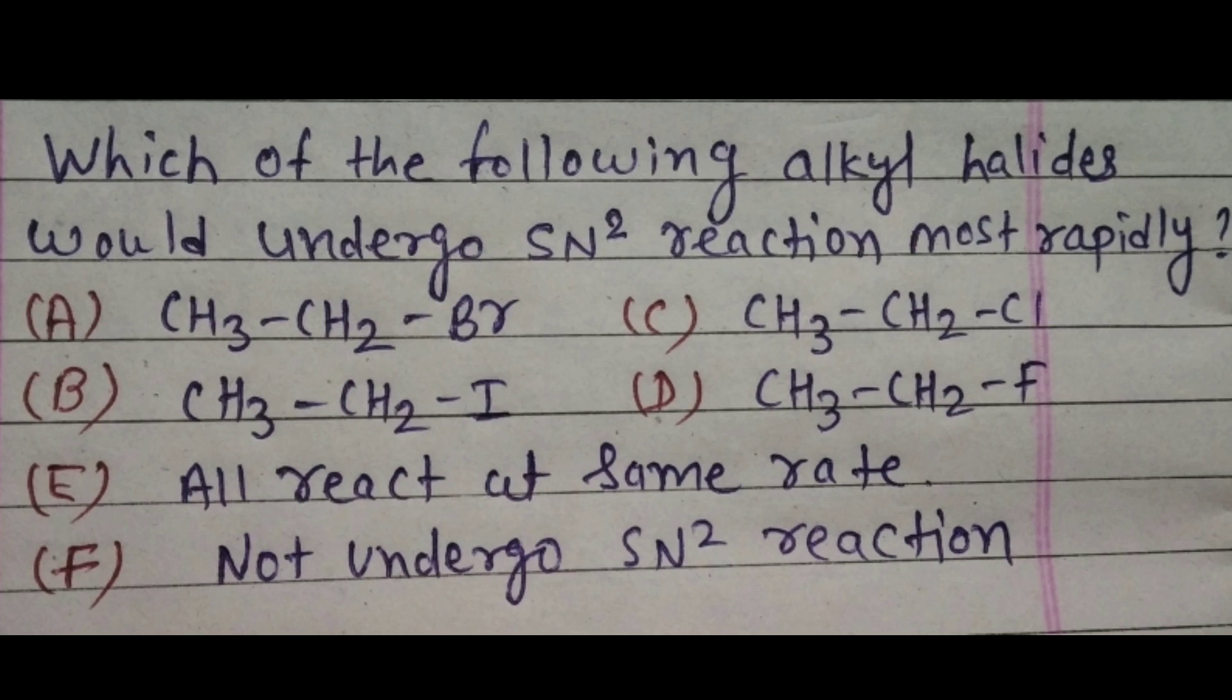Which of the following alkyl halides would undergo SN2 reaction most rapidly? Option A is bromoethane, option B is iodoethane, option C is chloroethane, option D is fluoroethane, option E all react at same rate, option F not undergo SN2 reaction.